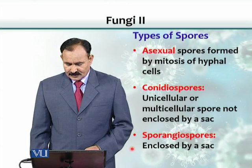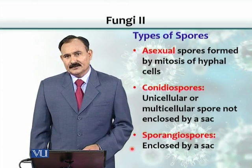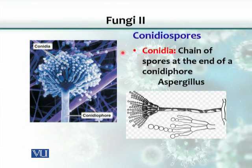Let's see how conidia spores and sporangiospores look. One type of conidia spore is called conidia. Conidia are basically round-shaped structures. When arranged in a chain, we call them conidia, as you can see in this example. The part that bears those conidia is called the conidiophore.